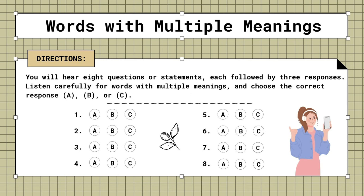Mini-test. Words with multiple meanings. You will hear 8 questions or statements, each followed by 3 responses. Listen carefully for words with multiple meanings and choose the correct response. A, B, or C.